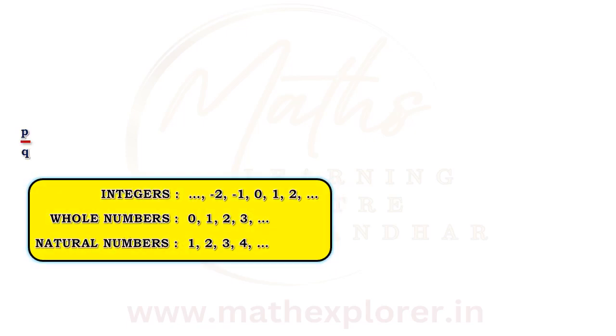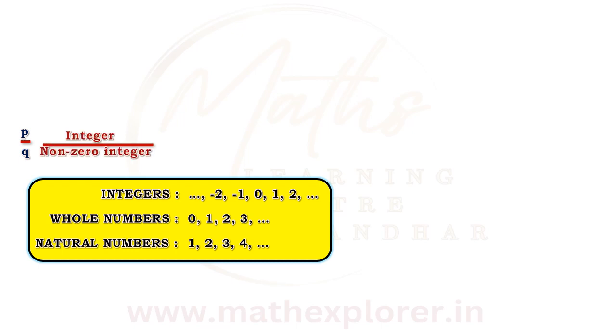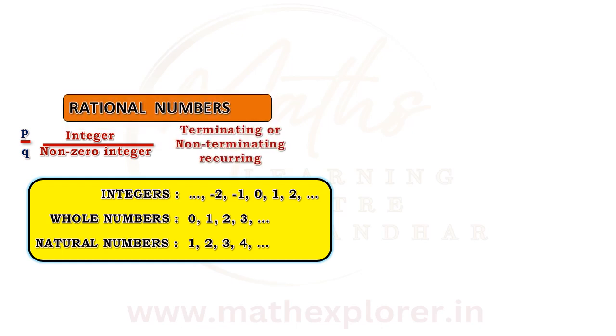The numbers of the form p by q, where numerator p is an integer and denominator q is a non-zero integer, form the collection of rational numbers. The decimal representation of rational numbers is either terminating or non-terminating and recurring.